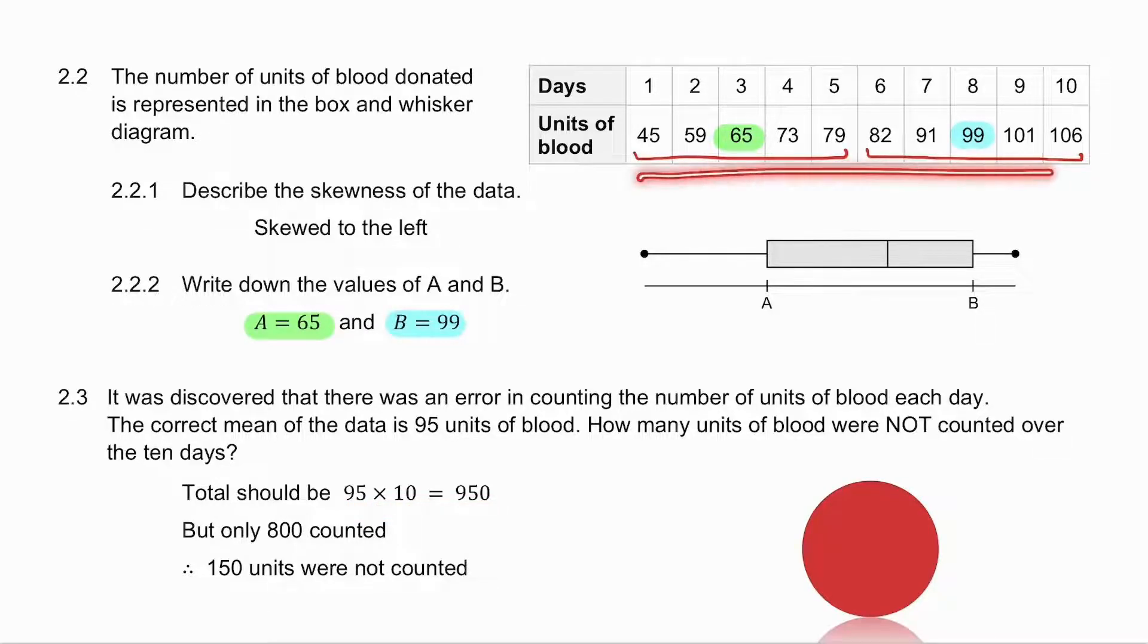But if we add all the data together, we only get 800. So how many were not counted? 950 minus 800. In other words, 150.